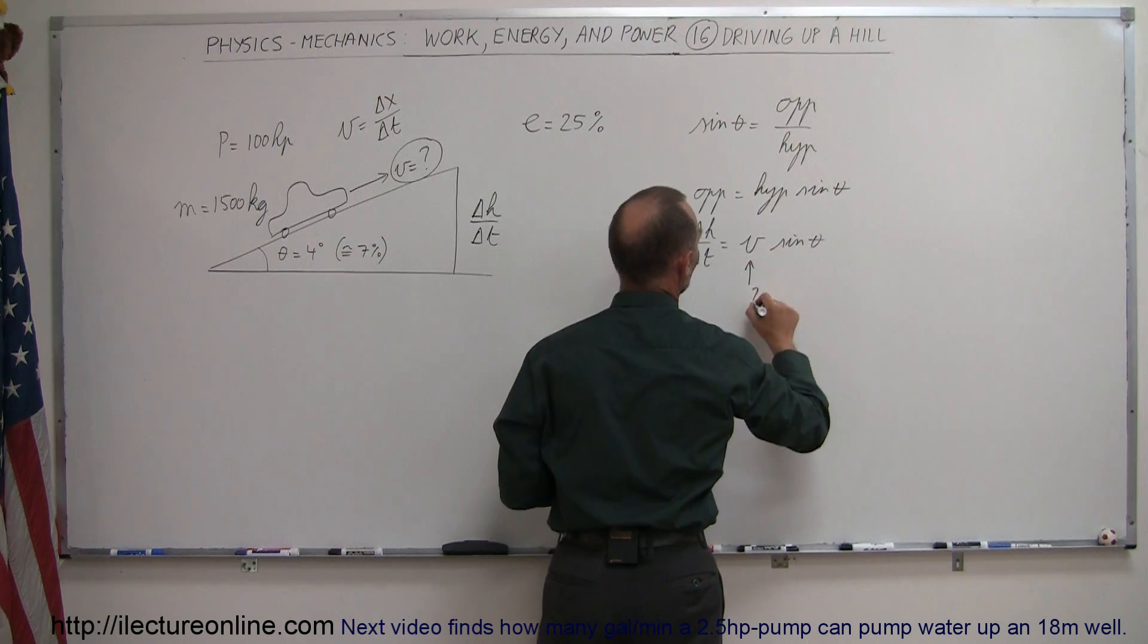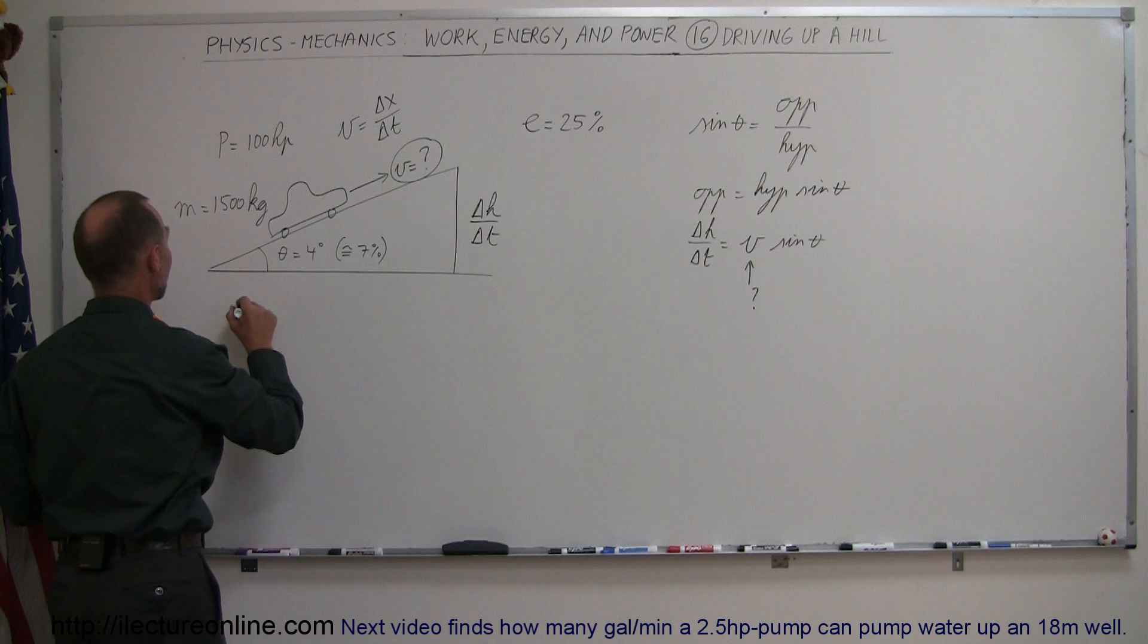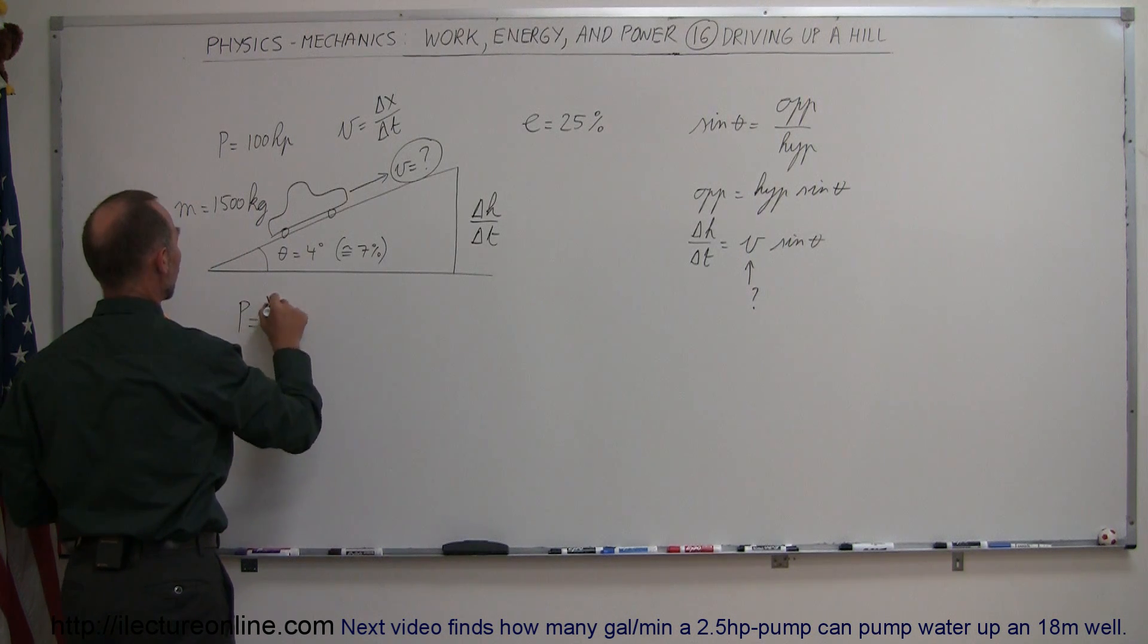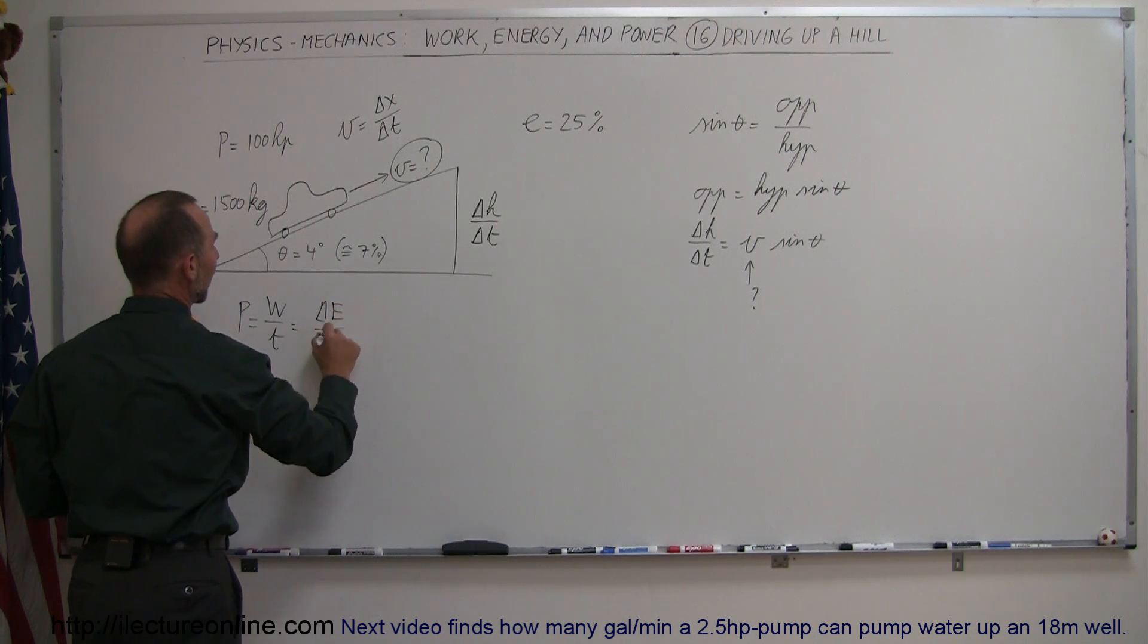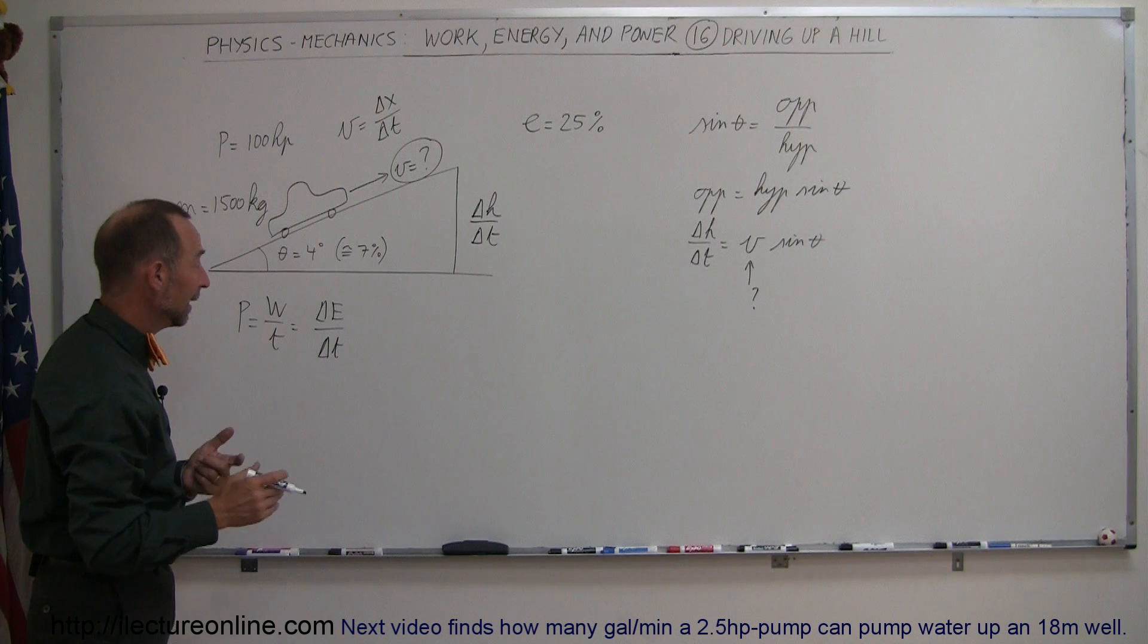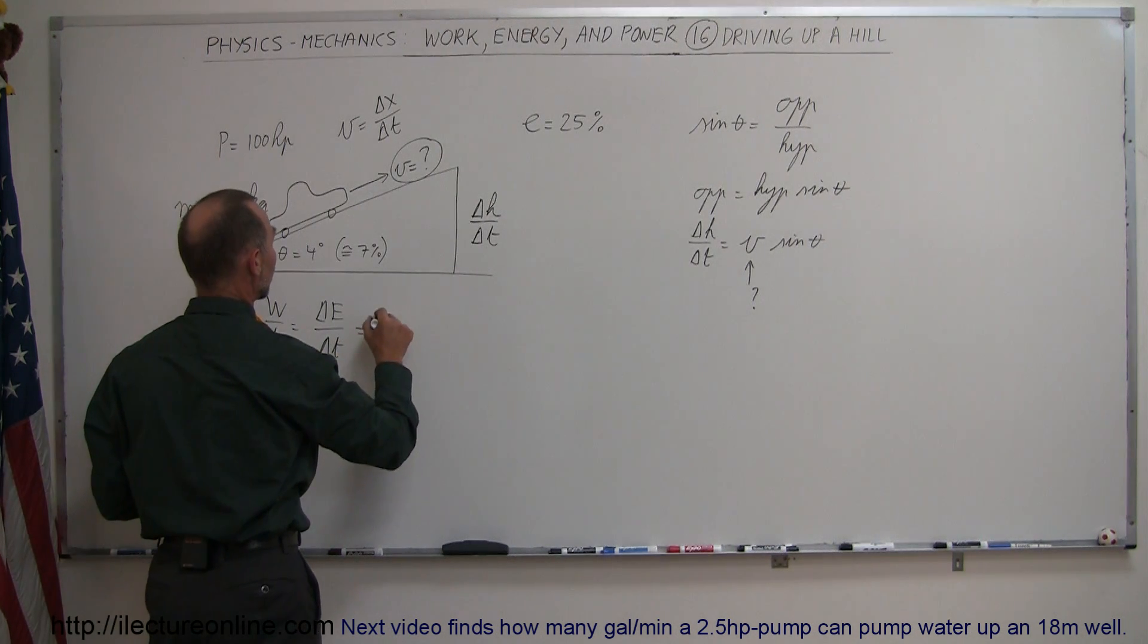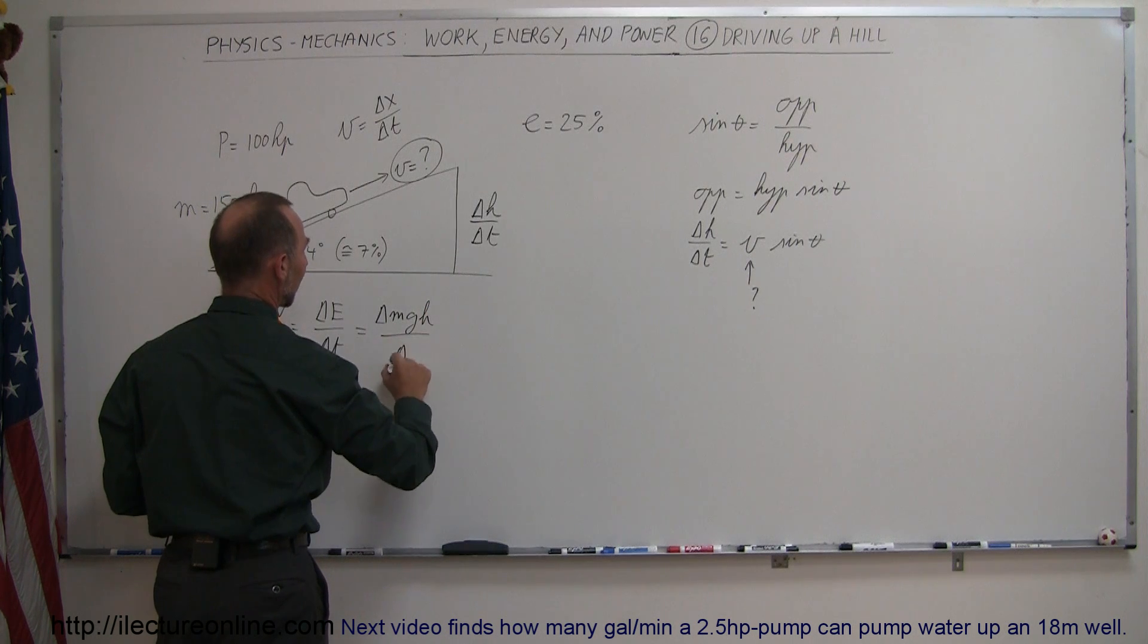And this is what we're looking for. Now, why did we do all that? That's because the definition for power is equal to work over time, or we could say that's equal to the change in energy divided by how much time that takes. And in this case, the change in energy is going to be the change in potential energy, so the change in MGH over the time elapsed.